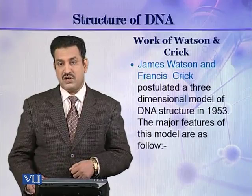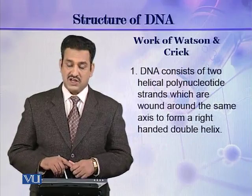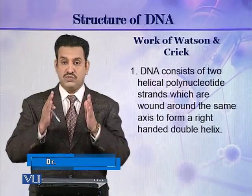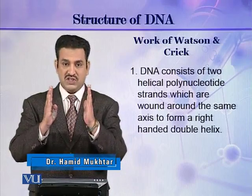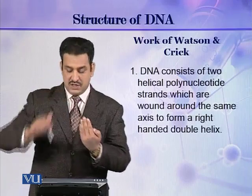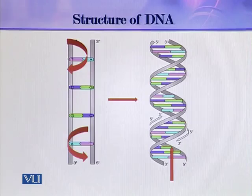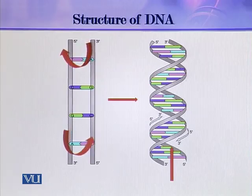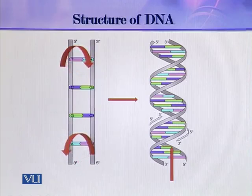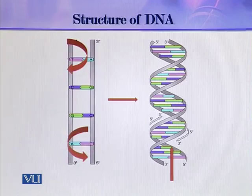The major features of this model are as follows. Watson and Crick described that DNA consists of two helical polynucleotide chains. These two polynucleotide chains are joined with each other and then helically coiled around an axis, forming a double helical structure as you can see in this picture. This is the double helix structure of the DNA molecule.